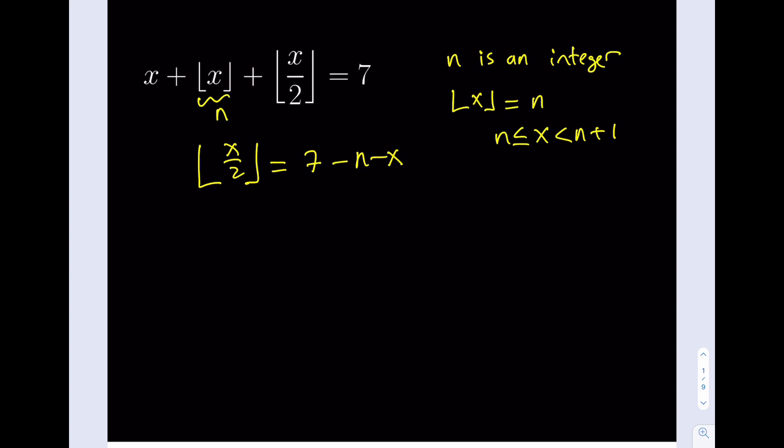Now, this also has a meaning, obviously. So we can safely say that x over 2 needs to be, according to this equation, needs to be between 7 minus n minus x and 8 minus n minus x. So one more than that.